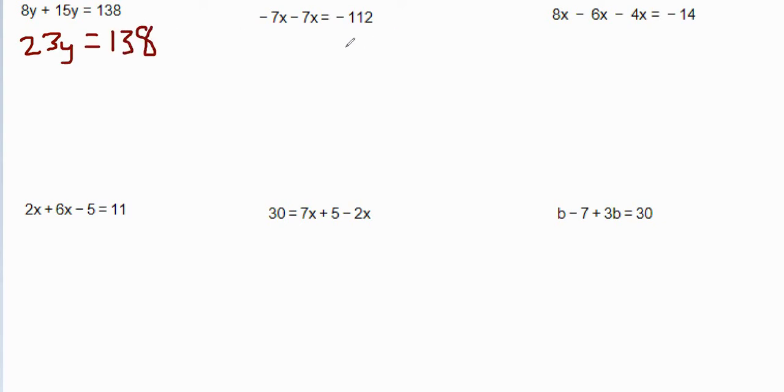So 23y means 23 times y. So we're going to divide both sides by 23. So definitely get out your calculator for this. Divide both sides by 23, and 138 divided by 23 is 6.